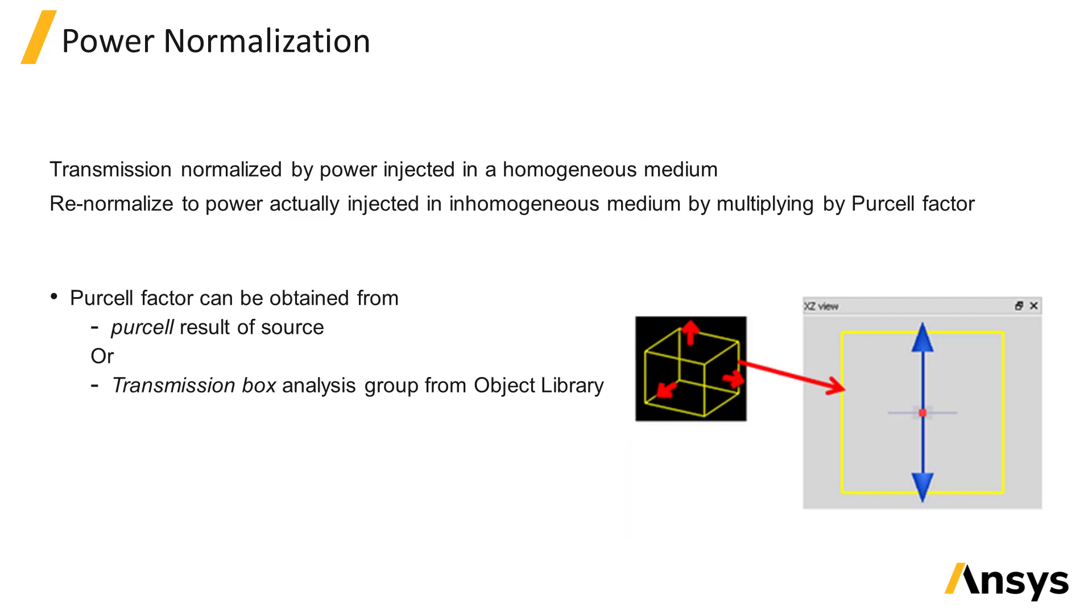On an earlier slide, we mentioned that by default, the power transmission result from a monitor is normalized by the analytically calculated power that would be injected by the dipole in a homogeneous environment. You can re-normalize transmission results by the actual power injected by a dipole by multiplying the transmission result by the Purcell factor.